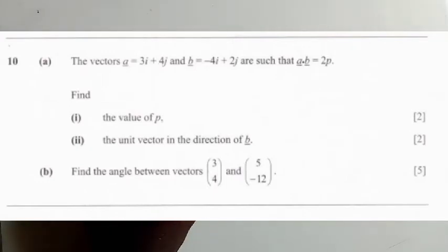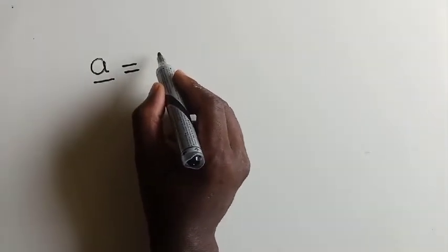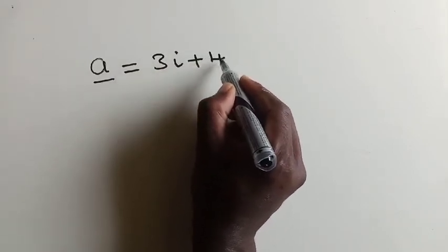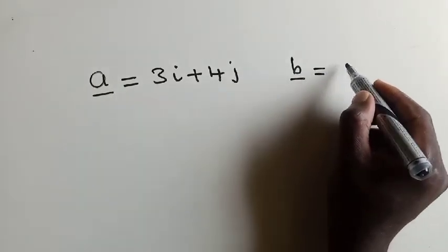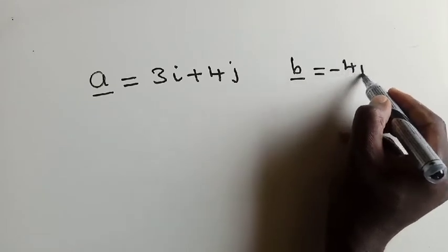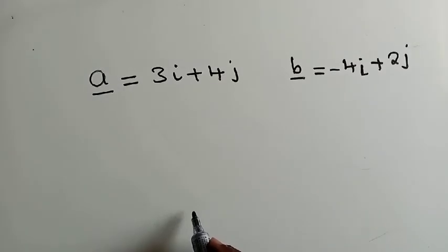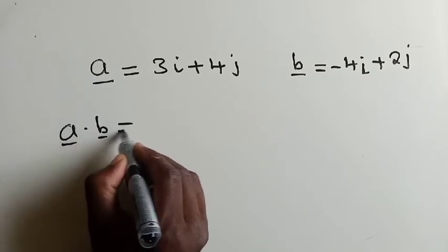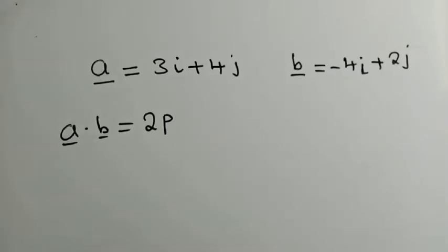First, let's copy the vectors the way they look. We've got vector A right here, which is equal to 3i plus 4j. And vector B is right here, is equal to negative 4i plus 2j. And there's a very important point which says that the dot product of these two vectors is equal to 2p. So how do we calculate for P? How do we find P?